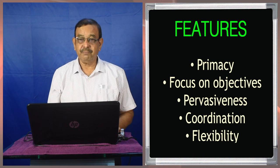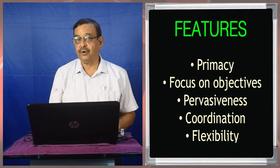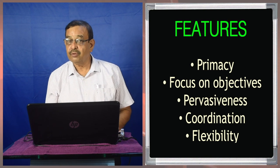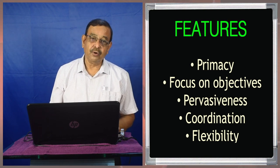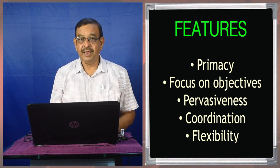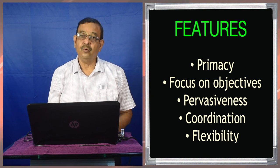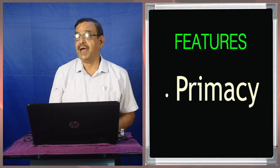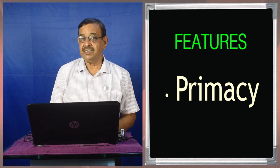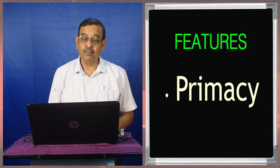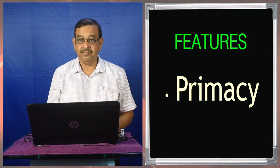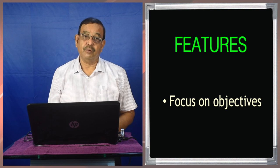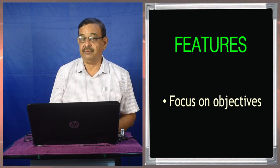There is a saying that planning and controlling are like two sides of management. Without planning, we cannot think about controlling. Based on controlling, we will take the feedback and then once again go back to our planning process. That's why planning is primary — primacy is one very important feature of planning. The second feature of planning is that it is always concerned about objectives, focus on objectives. Without the goal, we cannot think about planning.